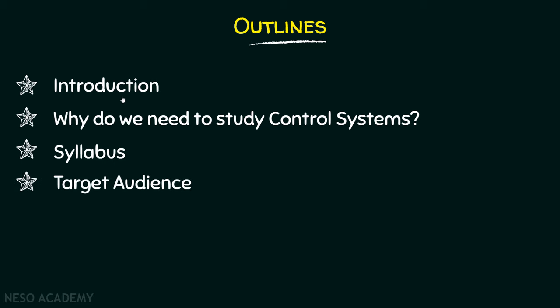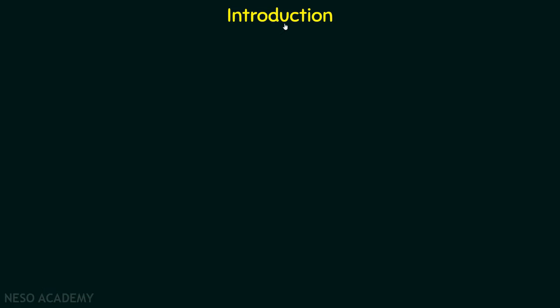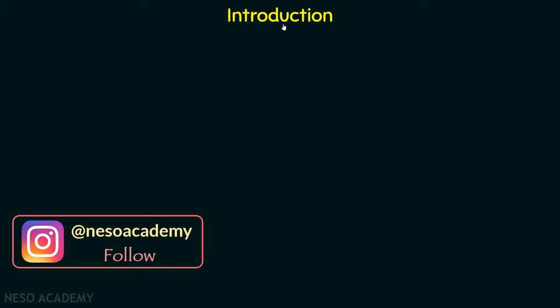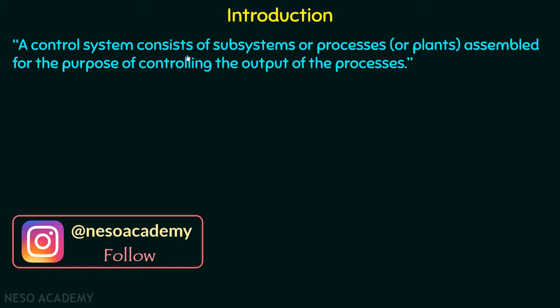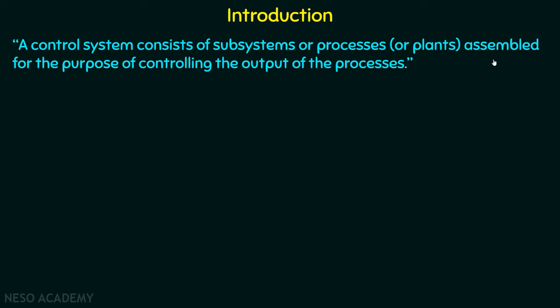So let's start with the introduction to the subject. Control systems are an integral part of modern society — numerous applications are all around us. A control system consists of subsystems or processes assembled for the purpose of controlling the output of the processes. Note this statement: controlling the output.